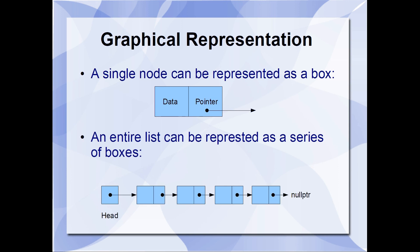So an entire list can be represented as a series of boxes. So here we see that we have a linked list that contains four nodes. And a linked list will begin with a head node, which is the very first node in the list. And the memory address of that head node is stored in a separate pointer, often referred to as the head pointer.